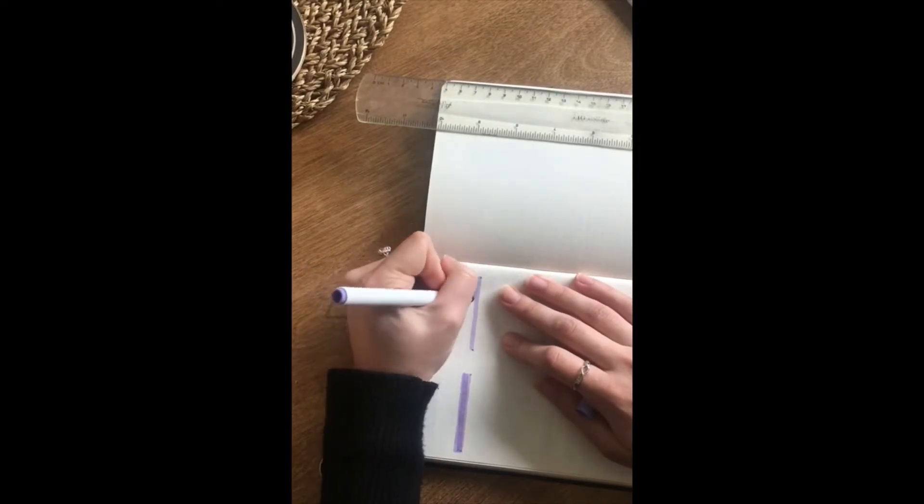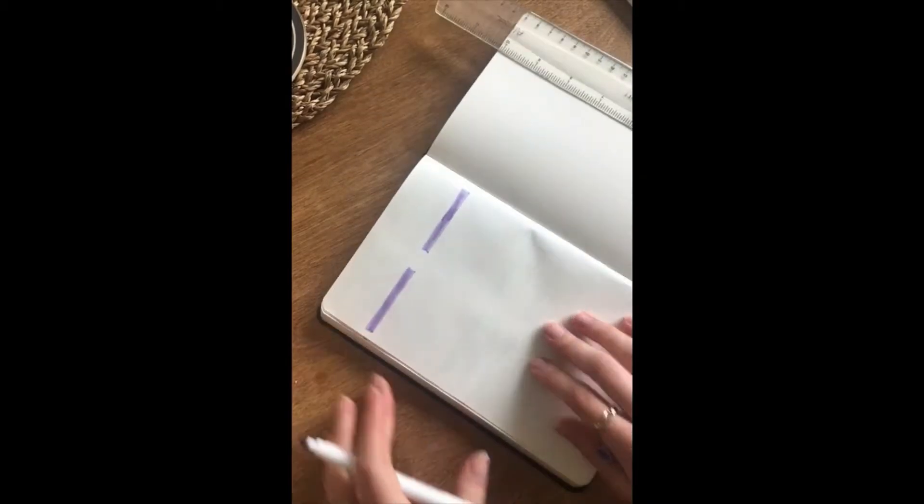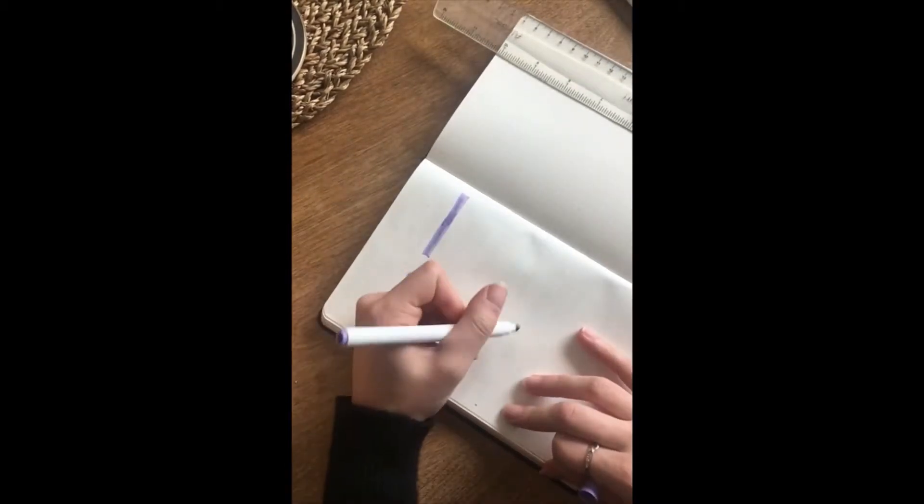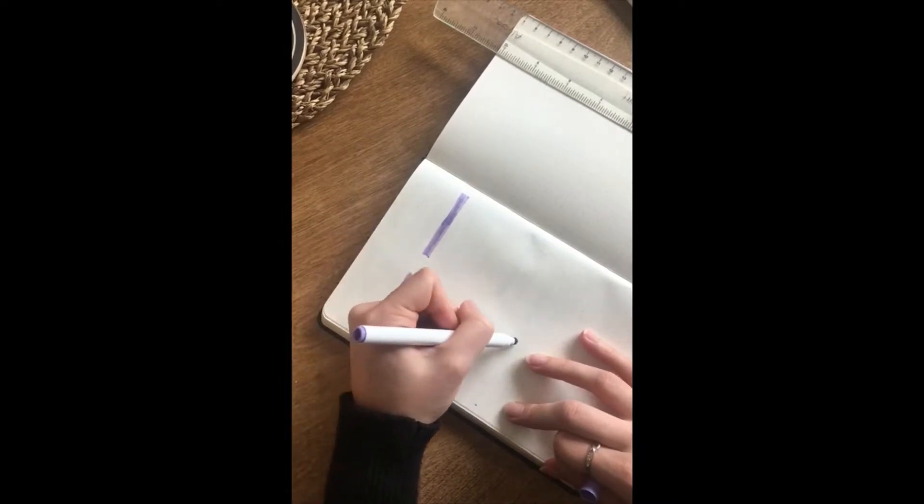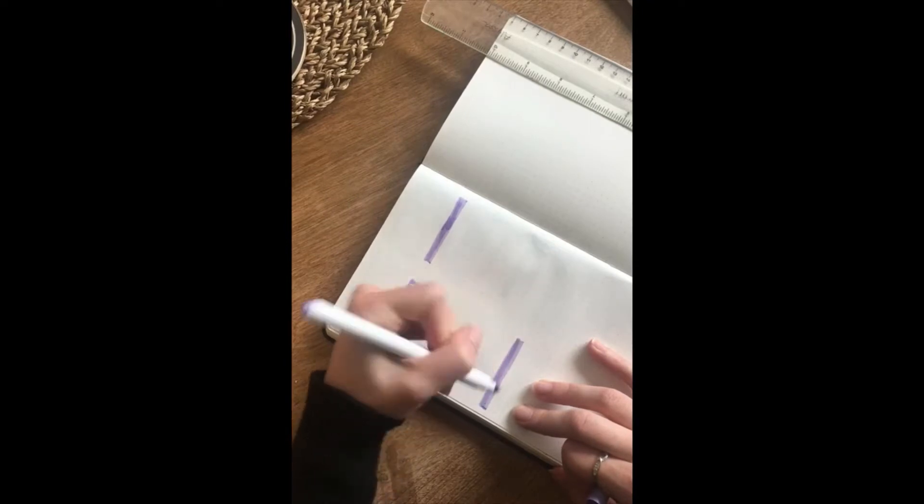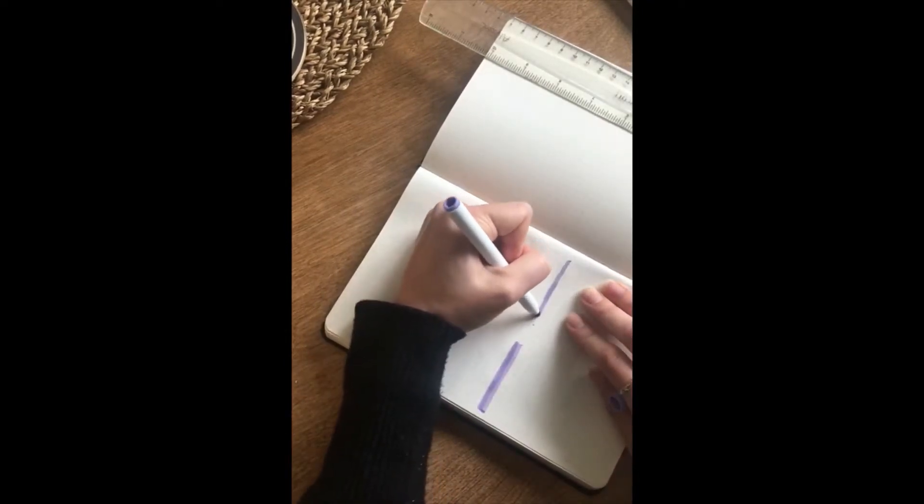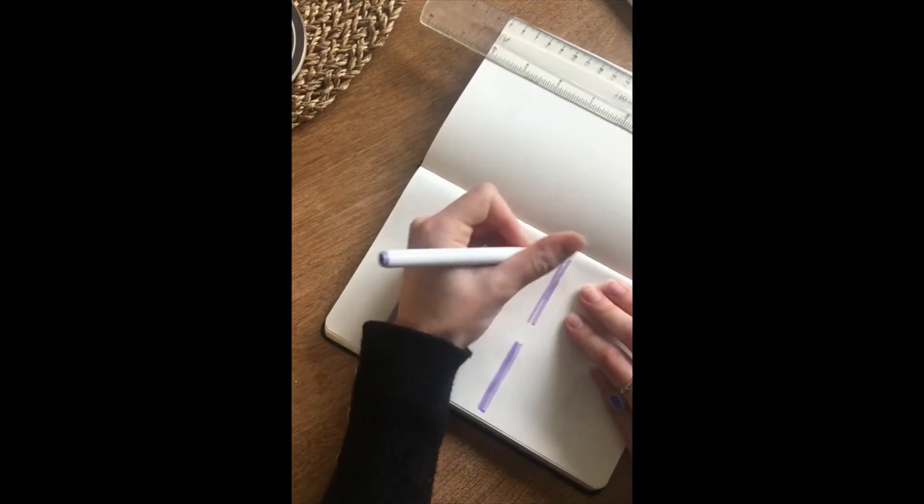For my weekly planners, I'll include all the days of the week, the month, and the exact number dates. As you can see, I'm putting colored lines side by side, a fourth way down the page, making sure they're even and the space in between are equal as well. I did about 10 to 14 spaces in between.